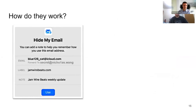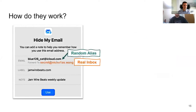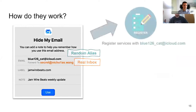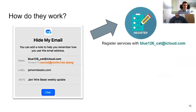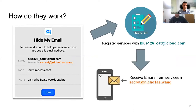Here's a brief workflow. You bind your personal email address to a randomly assigned alias, and then use the alias to register services. Upon the alias receiving any email — for example, verifications or notifications — they will be forwarded back to your personal email address. A user should have the same experience as if they had signed up with their personal email.